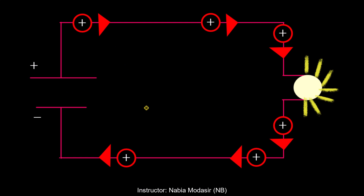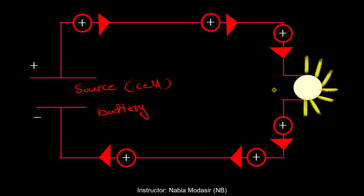Here is a diagram. Take a look at this diagram. In this diagram, we are having three things. The first one is a voltage source or a battery — we can say it's a source, a cell, or a battery. There is no difference. And we are having a bulb, which is also called a resistor.